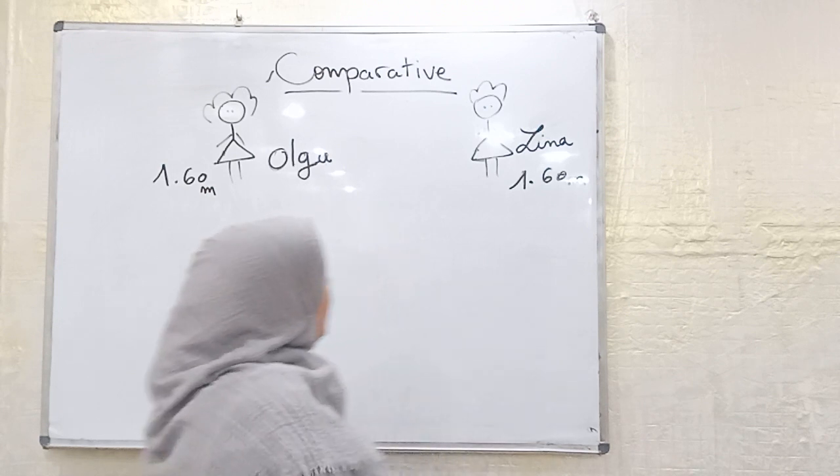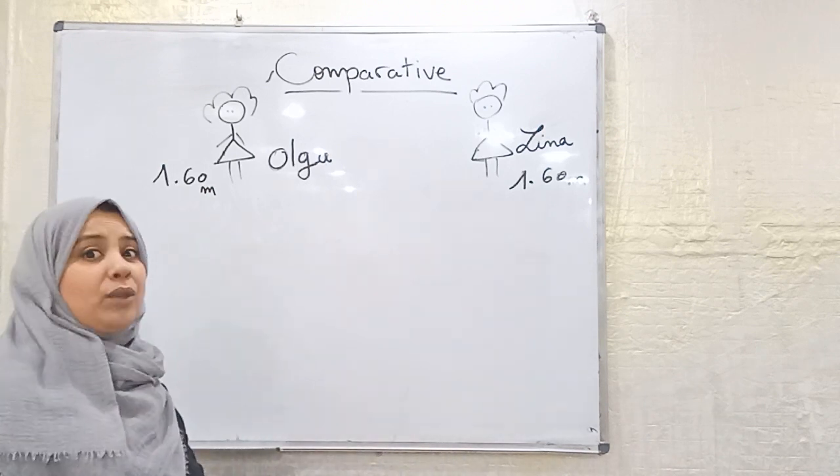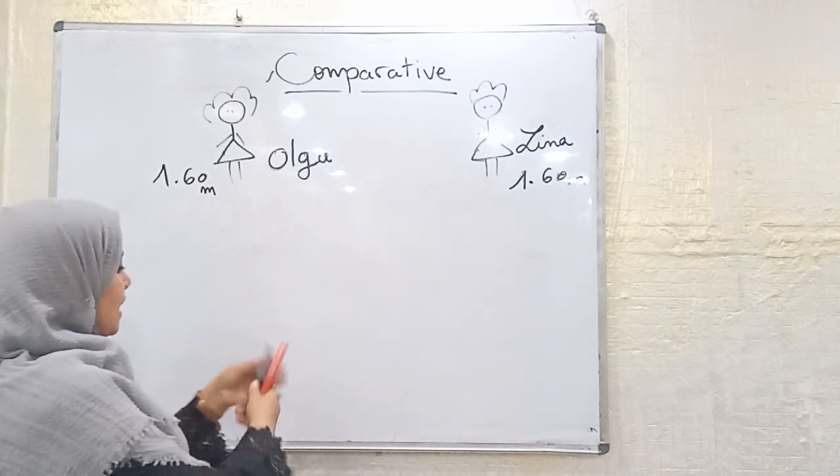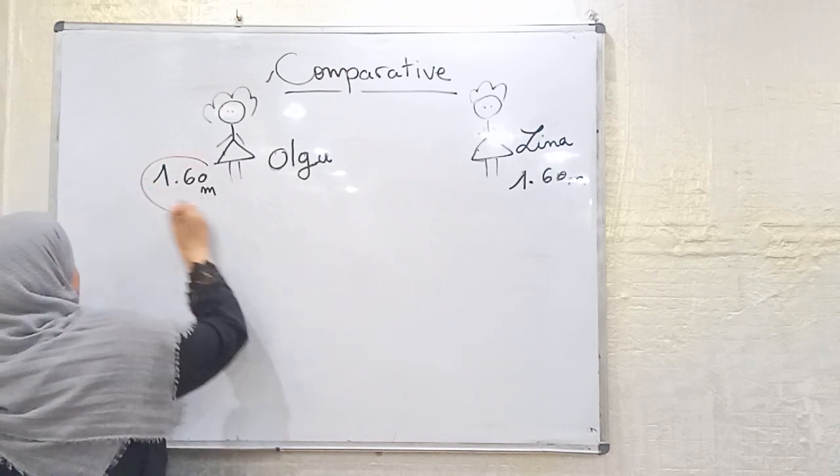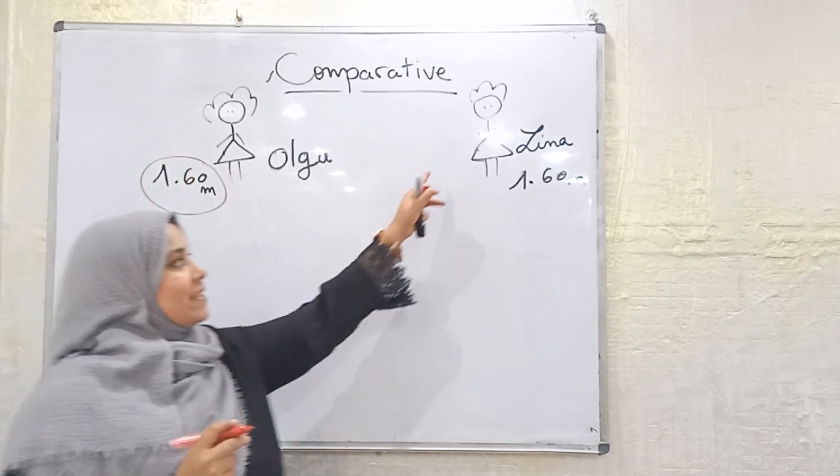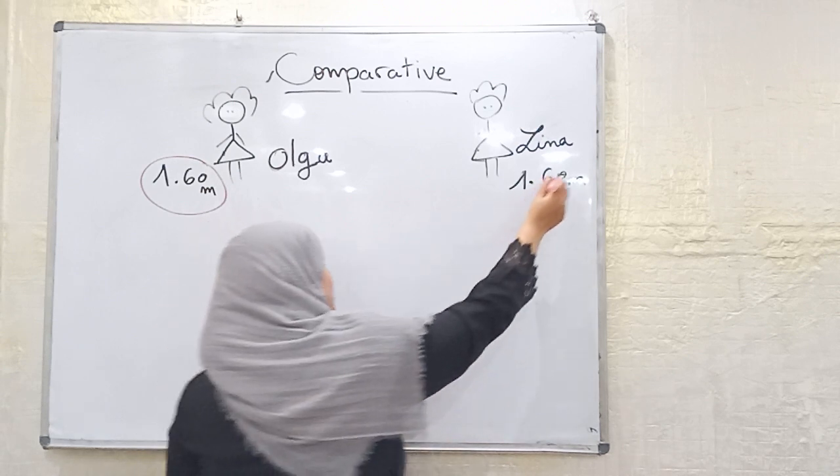Let's see now together with Olga and Lina. How tall is Olga? Olga is 1 meter 60. How tall is Lina? Lina is 1 meter 62.